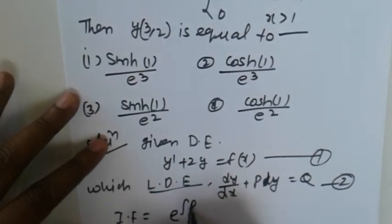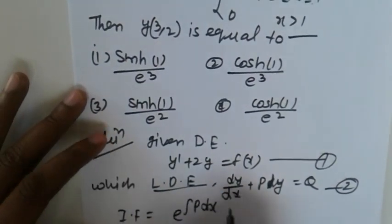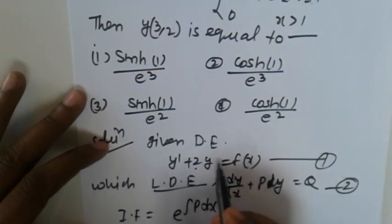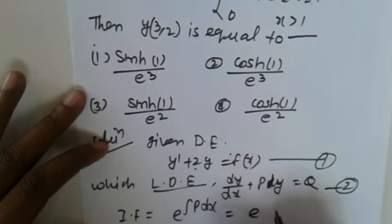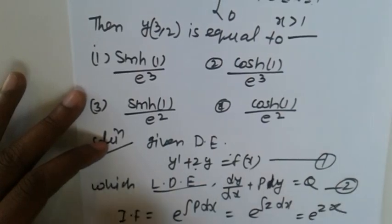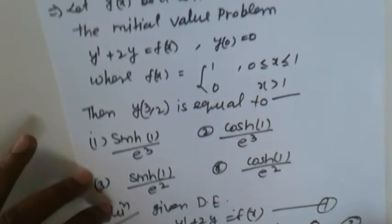The integrating factor is e raised to the integration of P dx. For this problem, the integrating factor is e raised to integration of 2 dx, which equals e raised to 2x.